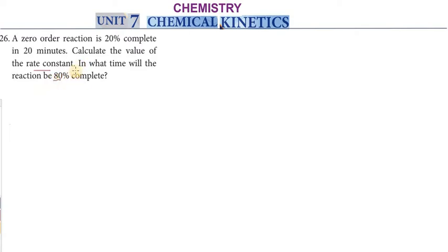These questions are all about zero order reactions. The rate constant needs to be found. For a zero order reaction that is 20% complete: the initial concentration A0 is taken as 100%.